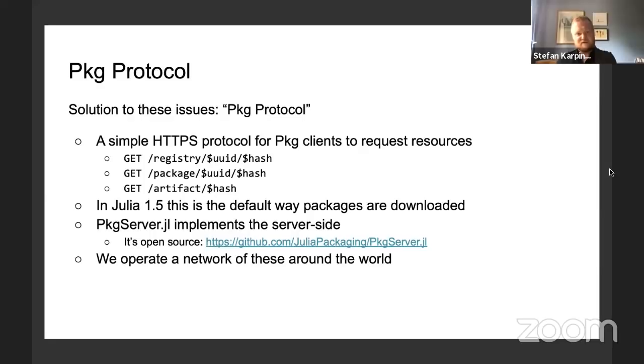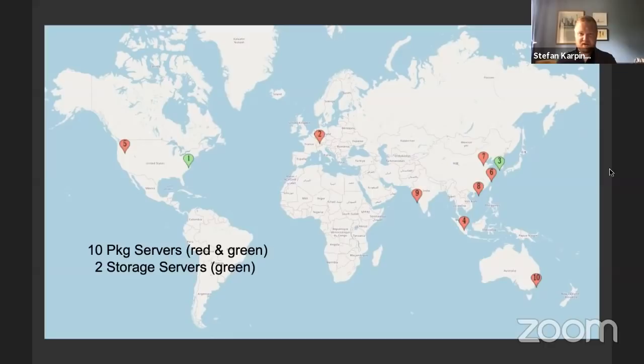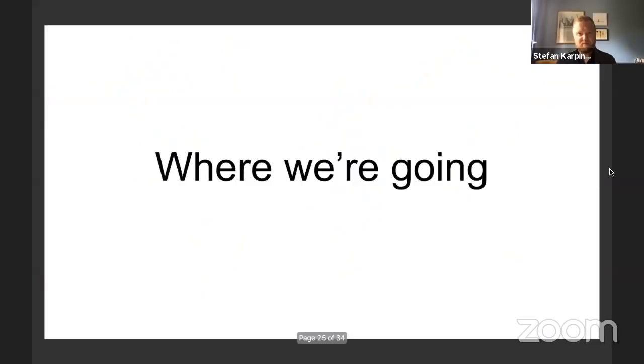We operate a network of package servers around the world. There are 10 package servers, and then a storage server which is basically a persistence layer behind the package servers which are just caches. We have two storage servers on opposite ends of the planet. This is probably going to grow — we want to cover the entire world, but it depends on where AWS offers certain services.